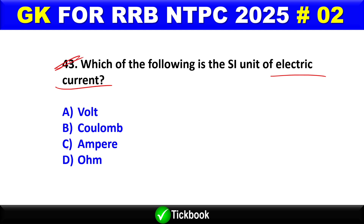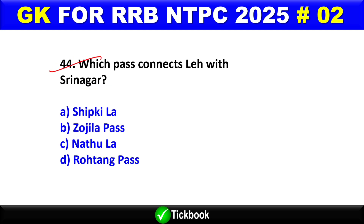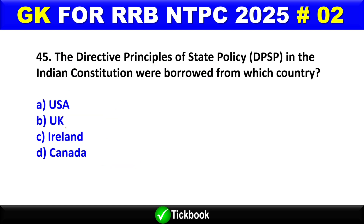Question number 43: Which of the following is the SI unit of electric current? Option C is the right answer — ampere. Question number 45: The Directive Principles of State Policy in the Indian Constitution were borrowed from which country? Option C is the right answer — Ireland.